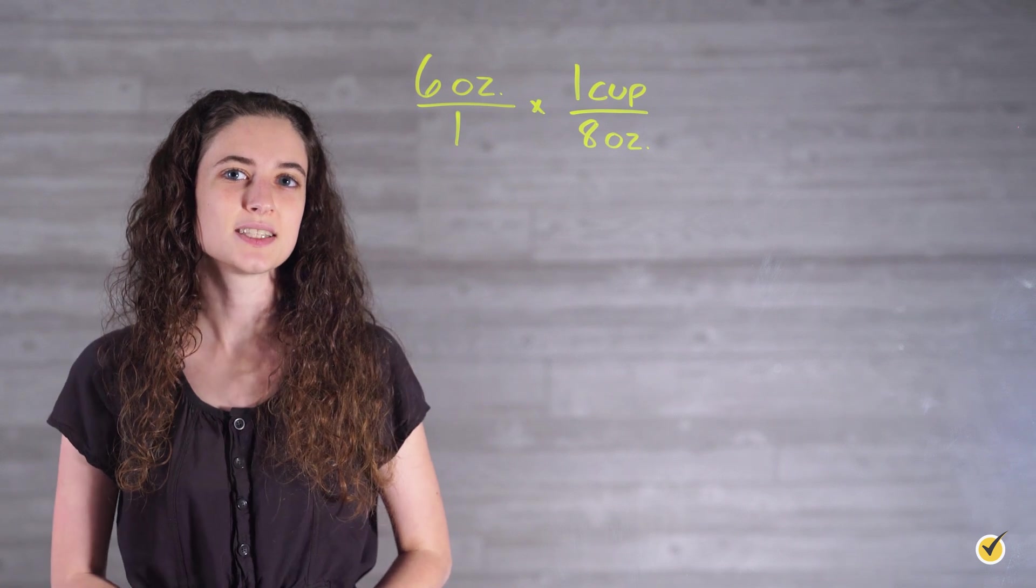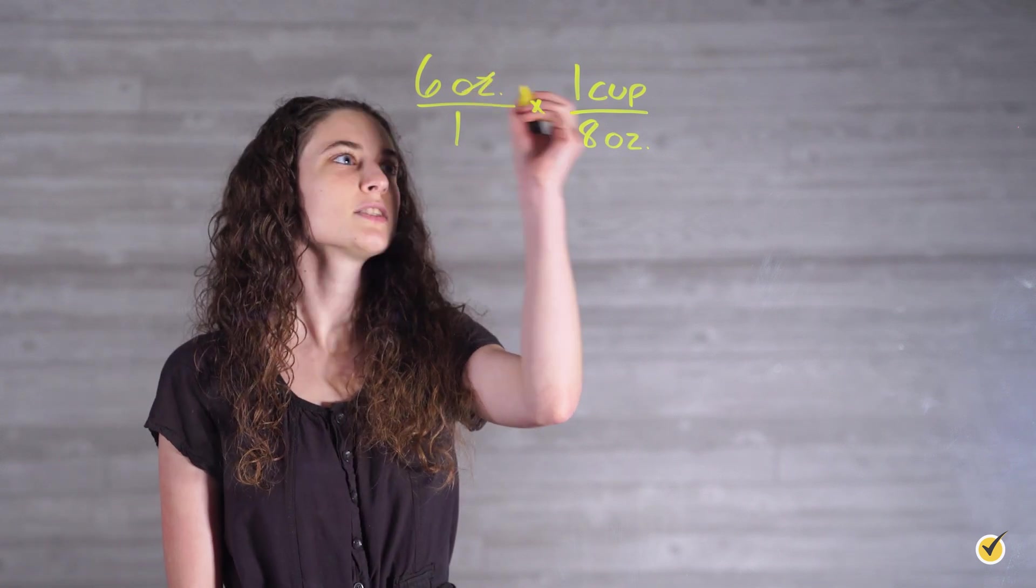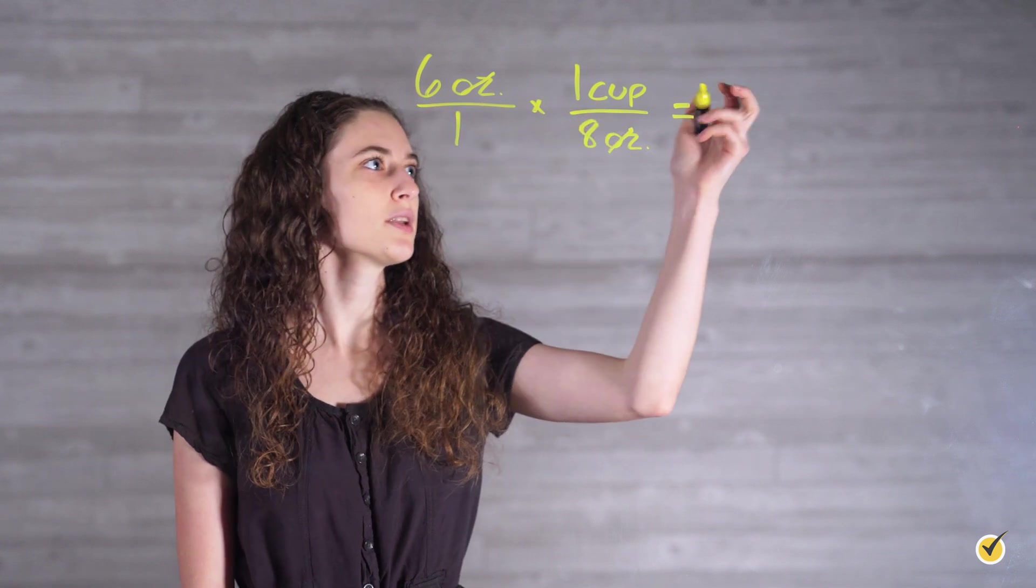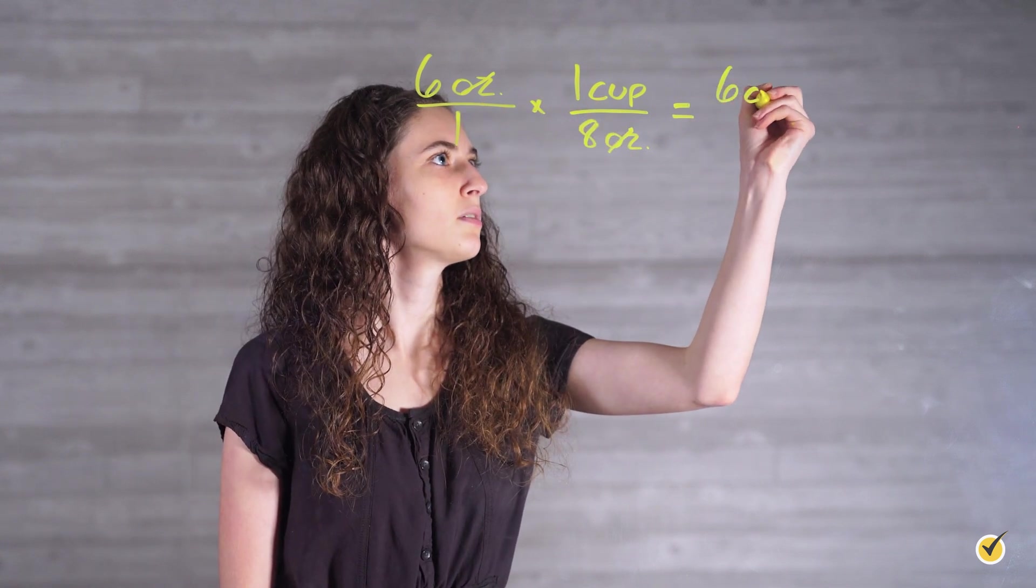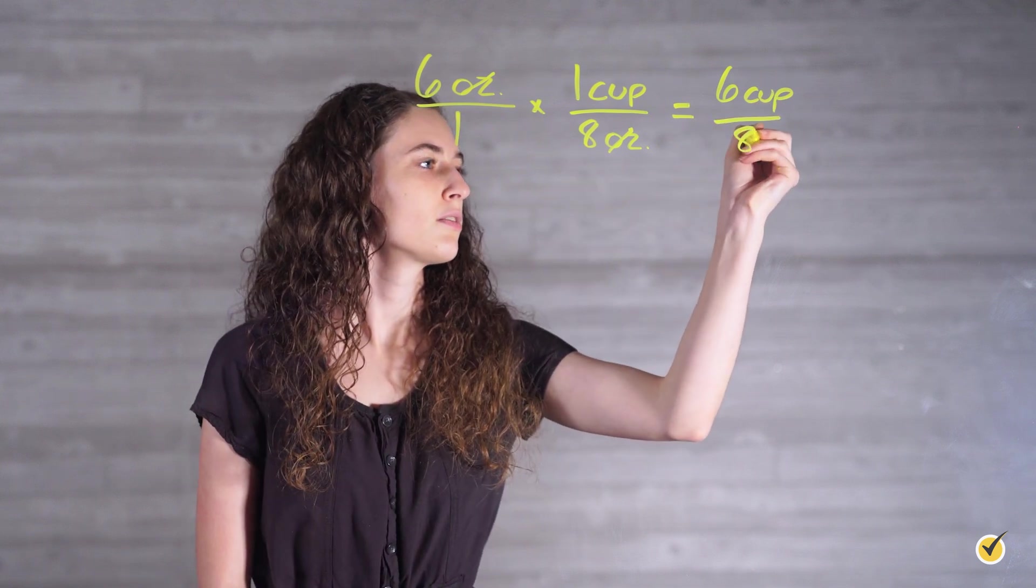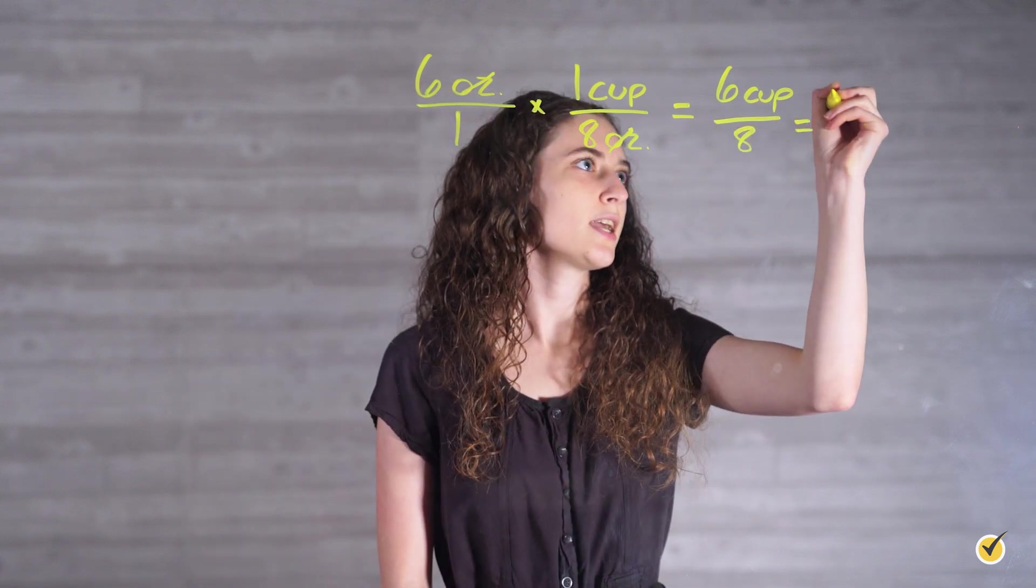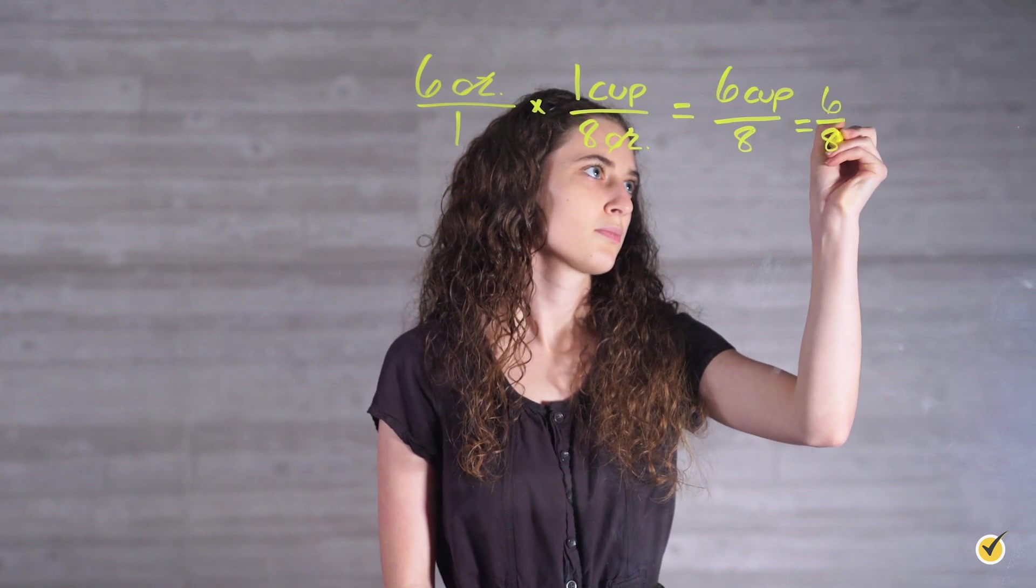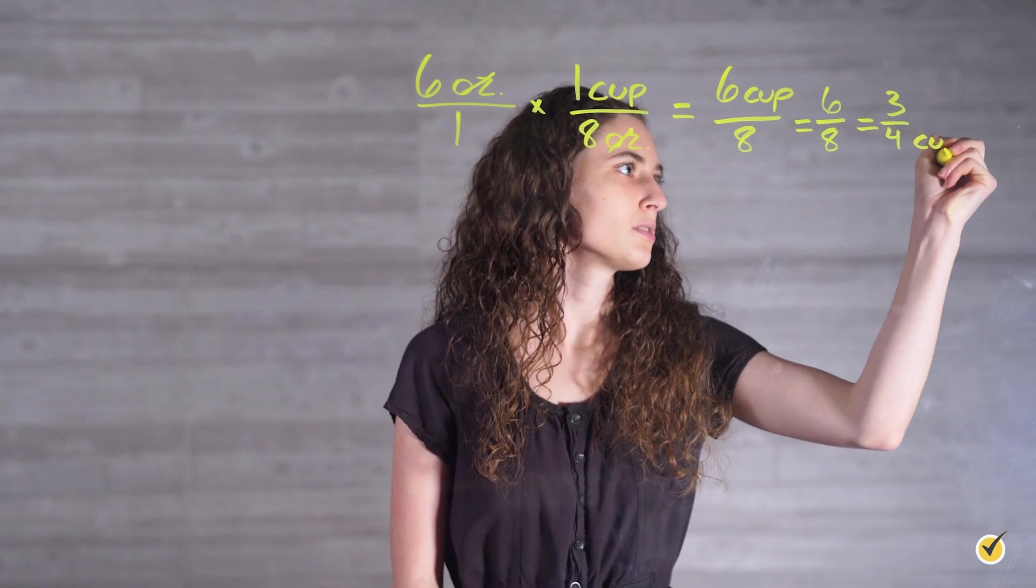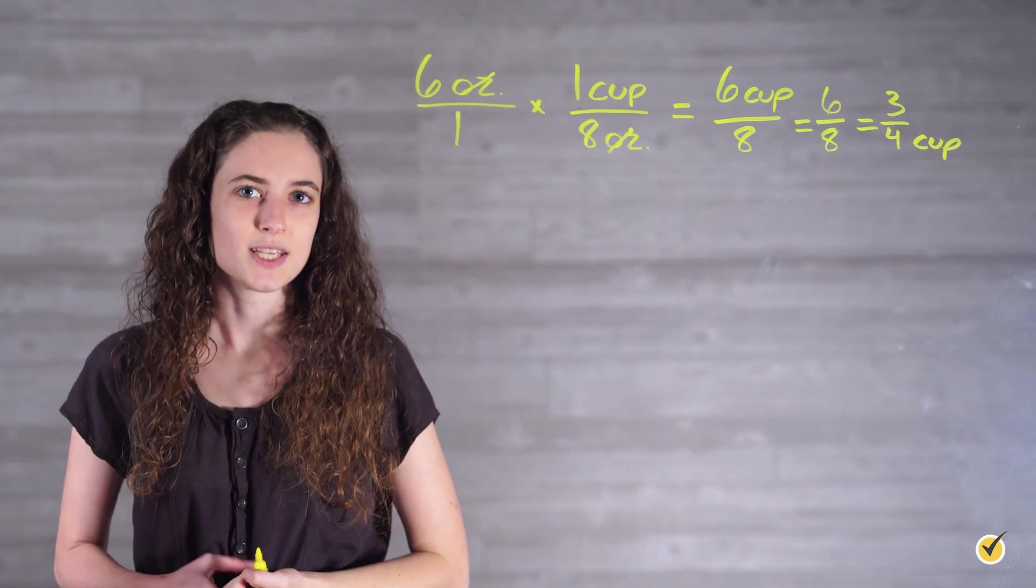We then multiply across and simplify. So our ounces cancel out, and we are left with six times one cup is six cups over eight. So there are six eighths of a cup, or three fourths cups is equal to eight ounces.